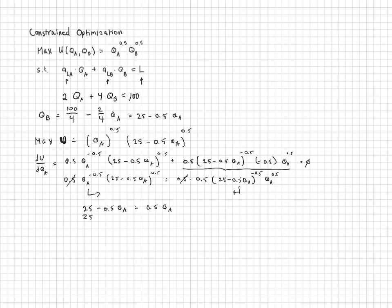Putting all the QAs on one side, we have that QA is going to be equal to 25. And in order to find QB, I'm going to plug that back into our original constraint, which is 25 minus 0.5 times the QA, which is 25. So that's going to be 25 minus 12.5, which is 12.5. So this is our optimal solution.